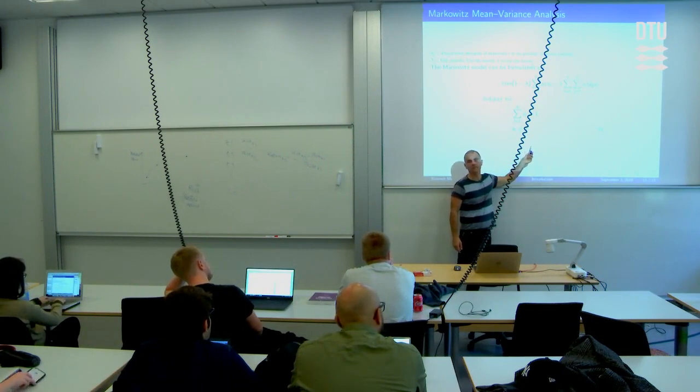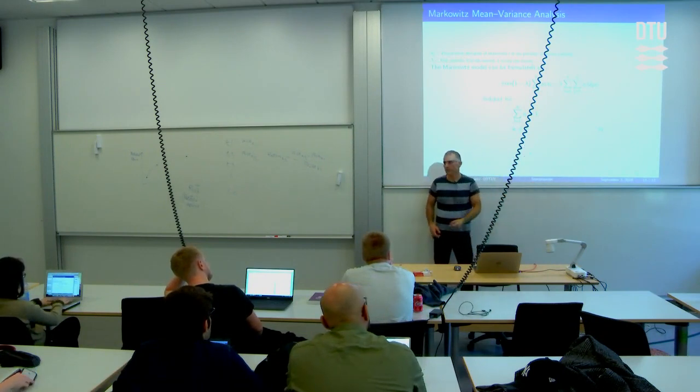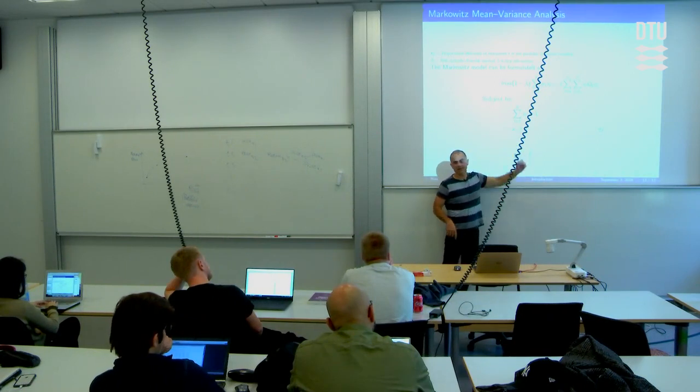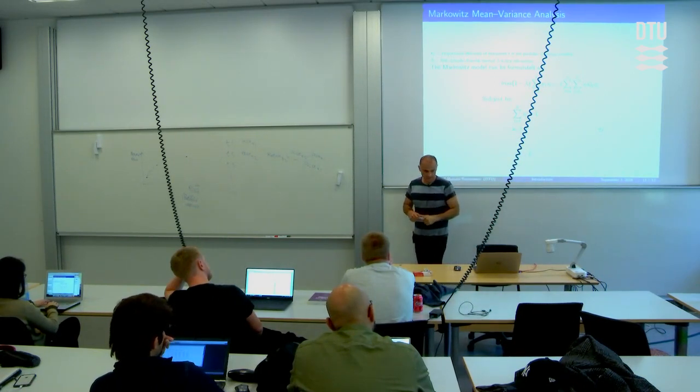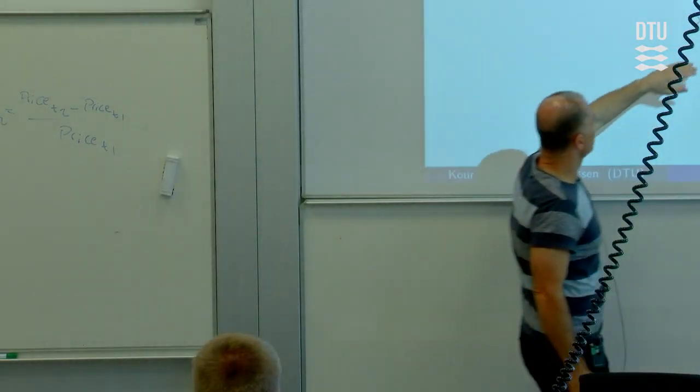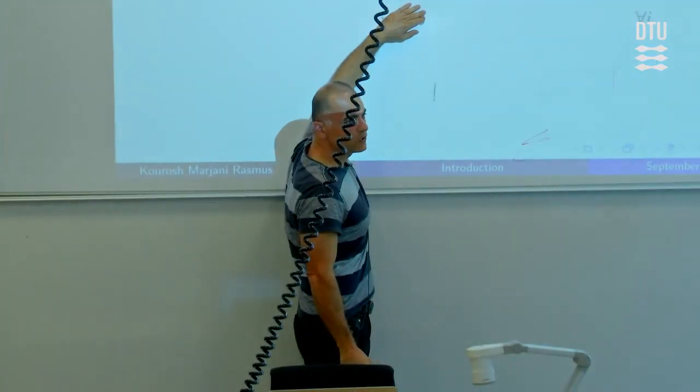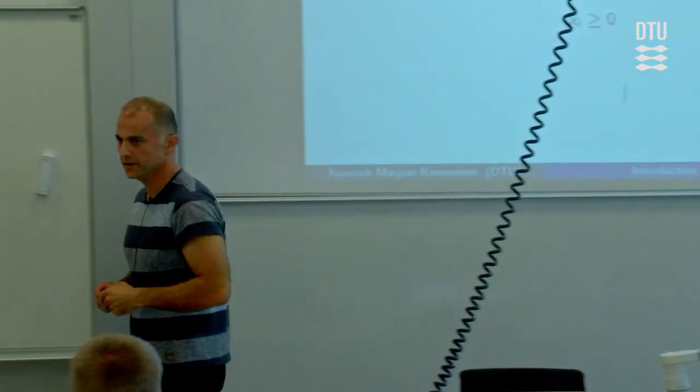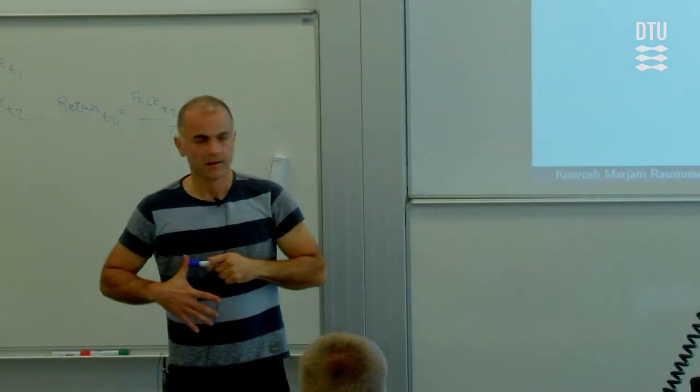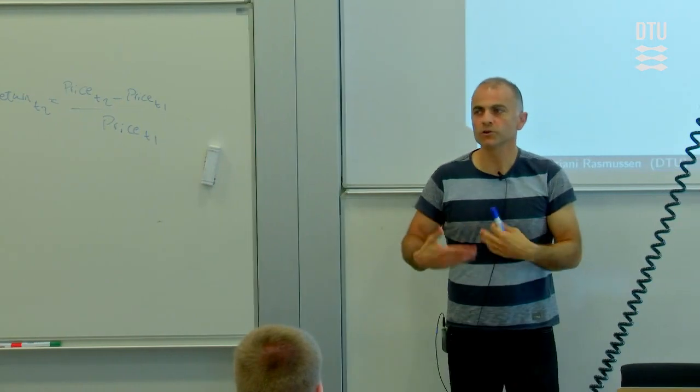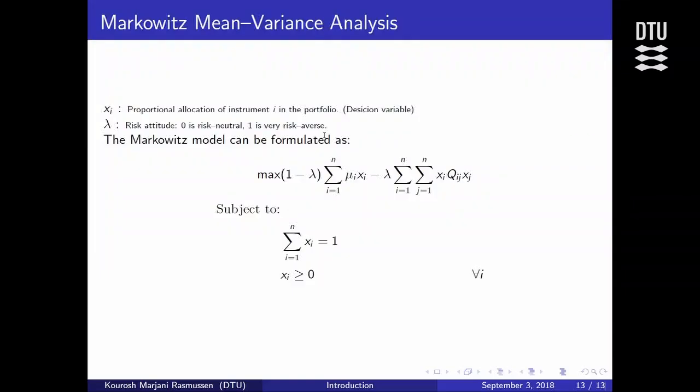That's not actually the requirement of the Markowitz model as he introduced it back in 1952. But we're going to get actually back to that because adding this constraint makes solving this model a bit more difficult. So he didn't, when Markowitz solved the original problem, it looked like this. So actually the x is then could be both positive and negative. And you might have been presented to that version of it also in the introductory course. But essentially having x is greater than zero means that no short selling is allowed.